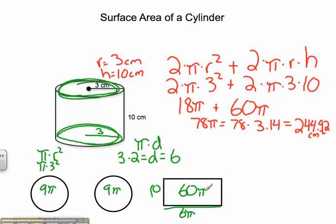Does this look familiar? So when I multiply it all out, if I do it this way, I get the same thing. I get 244 centimeters squared. And those are the two ways that you can find surface area of a cylinder. Hope this helps.